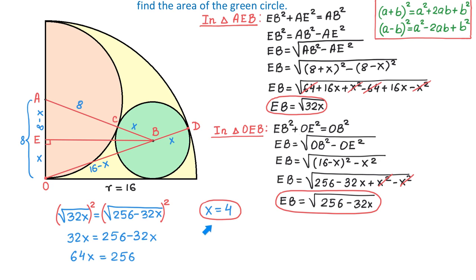So we just found the radius of the green circle. The formula for the area of the green circle is π R², and in this case R equals 4. So π times 4 squared is equal to 16π. We found the area of the green circle and it is 16π square units. Please let me know in the comments below if you have any other methods of solving this problem.